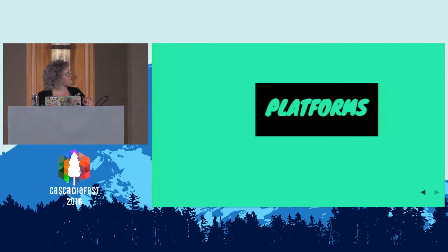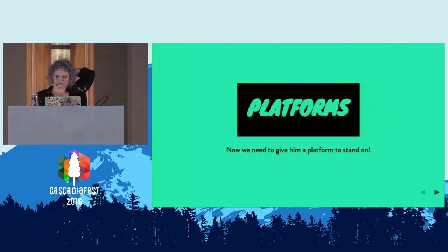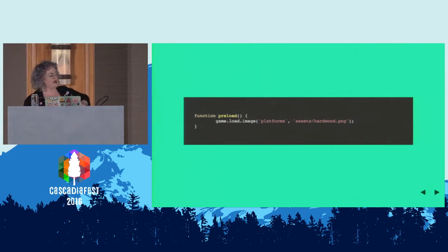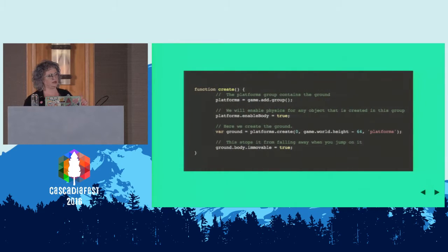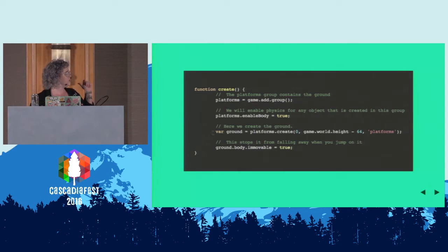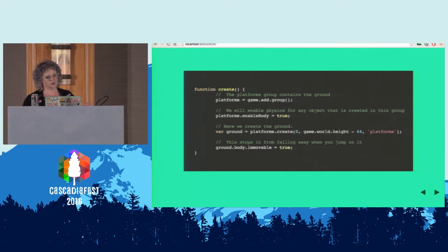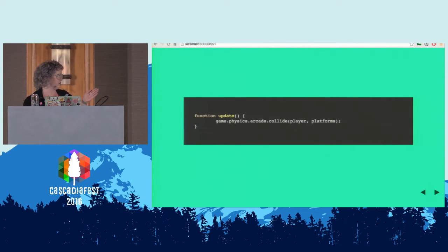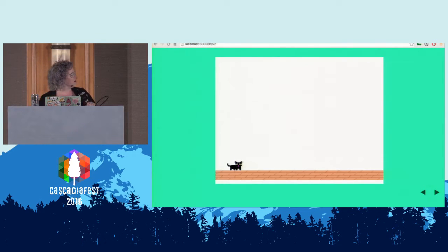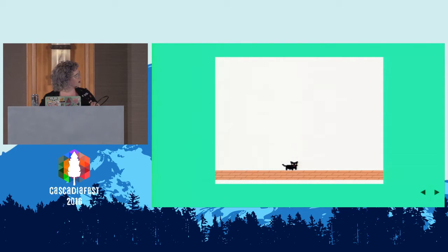Now we're going to give him something to stand on. We're adding in the hardwood asset for the platform in the preload function, because every image you add in preload first. Then in the create function, we're adding it to a group, enabling a body on it — which gives it a space — and we're adding it at zero and minus 64 of the total game height, and it's immovable. Then in update, we make it so the player collides with the platform, so Rick can walk around and not fall through the floor.